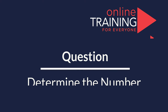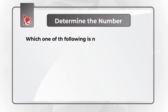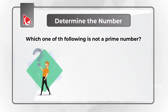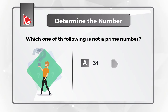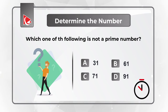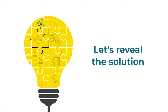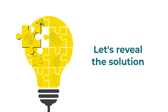Here is an interesting challenge where you need to determine which number is not a prime number. You have four different choices: Choice A, 31. Choice B, 61. Choice C, 71. And choice D, 91. Give yourself a little bit of time, maybe recall the definition of prime numbers, and see if you can come up with the solution.